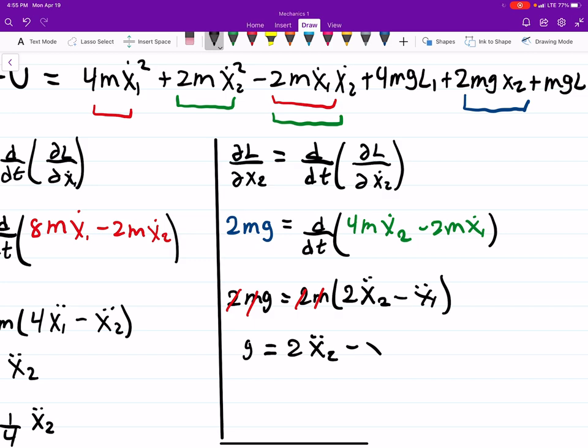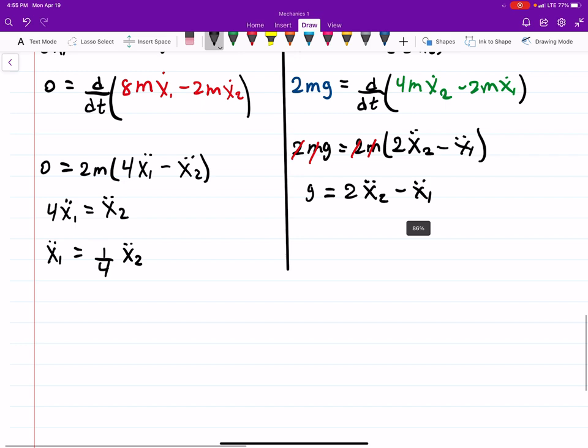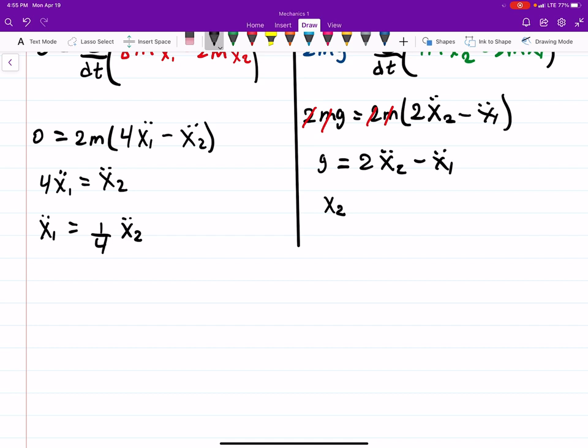g is equal to 2x2 double dot minus x1 double dot and you can kind of see I think pretty clearly now we have a system of equations two unknowns two equations so it's perfect. I'm going to solve for x2 here and I see that's going to be g plus x1 double dot over 2. So now I can take this and plug it into here to solve for the acceleration of the block that we're interested in.